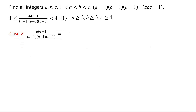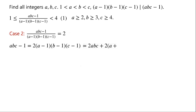Case 2: (abc - 1) / [(a-1)(b-1)(c-1)] = 2. Then abc - 1 = 2(a-1)(b-1)(c-1). By expanding, the right side equals 2abc + 2(a + b + c) - 2(ab + bc + ca) - 2.